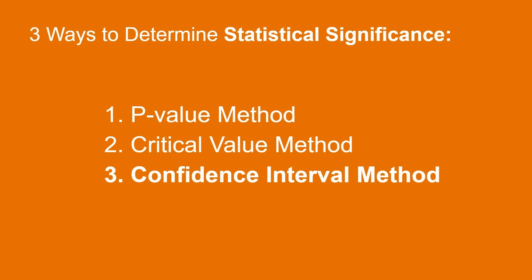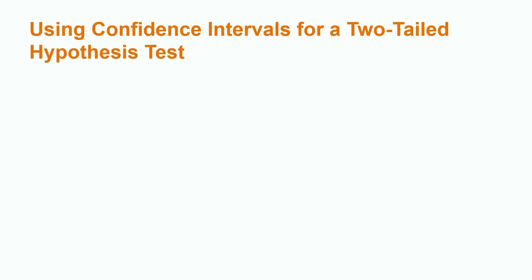Using the confidence interval method for determining significance is important because having a range of values that our parameter can fall into provides more robust information than our other two methods. This method can also be faster because all we need to do is see if the hypothesized value falls within our confidence interval. Confidence intervals can also tell us the conclusion of a hypothesis test without needing to compute a test statistic, critical value, or p-value.